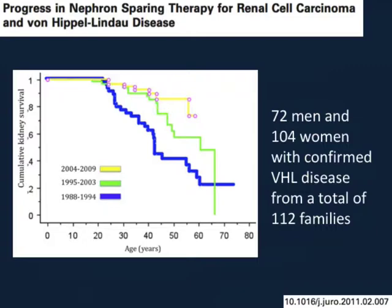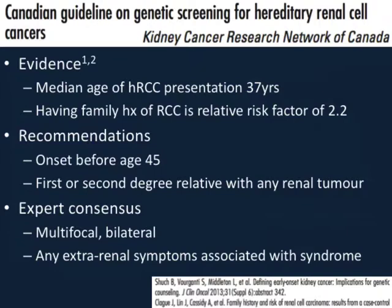One of the earlier guidelines published by the Canadian Kidney Cancer Research Network is based largely on expert consensus. The evidence indicates the median age of hereditary RCC — mostly from VHL data — is around 37 years. The recommendation is to screen patients below age 45, where you'll catch roughly 75% of these patients. A family history of RCC in any first- or second-degree relative is a relative risk factor and can prompt genetic screening. Other recommendations — multifocal bilateral disease and extra-renal symptoms — are driven by expert consensus and common sense.